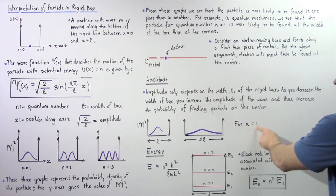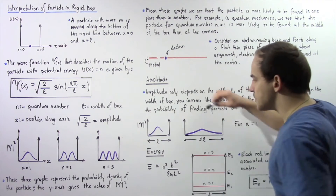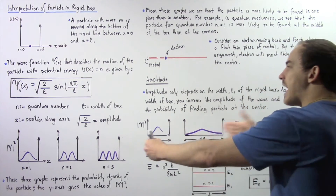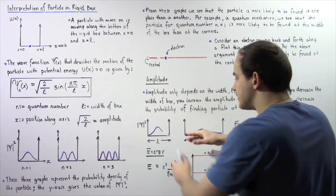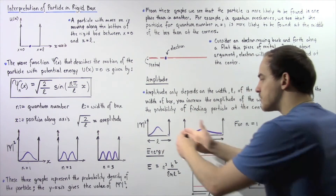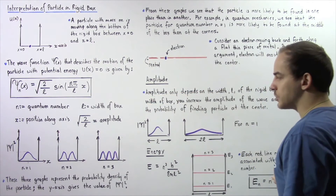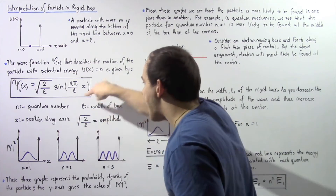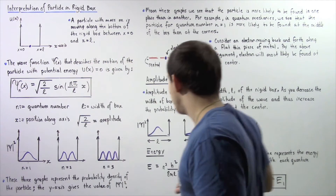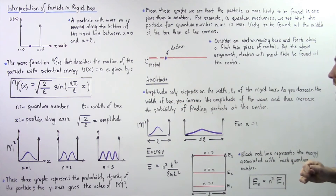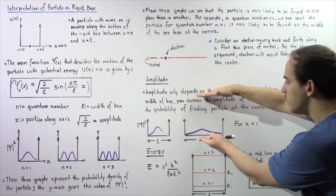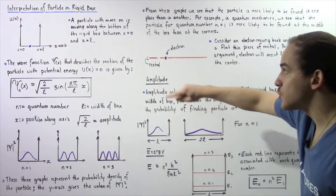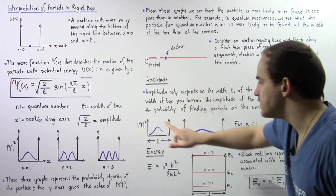For n equals one, consider the y-axis as the square of the absolute value of psi and the x-axis as position along L. For a box of width L we get one probability hill. If we increase the width to 2L, the amplitude decreases, which decreases the wave function and its square, so the hill decreases — meaning there is a smaller probability of finding the particle at the center compared to the smaller box.